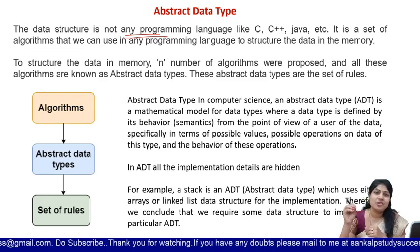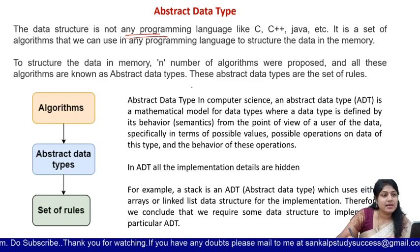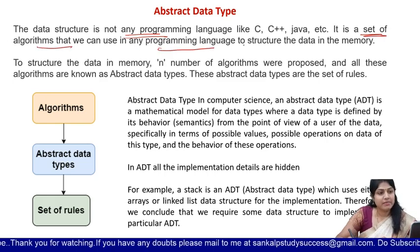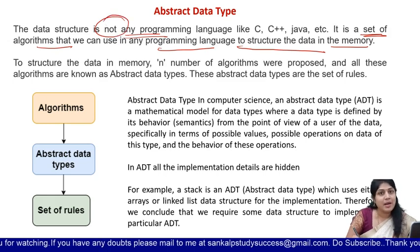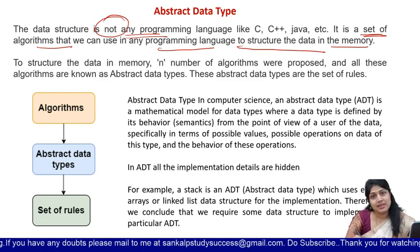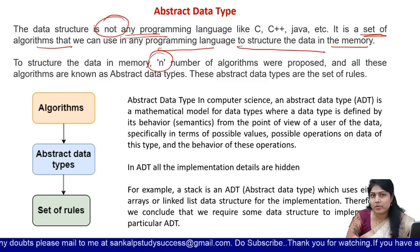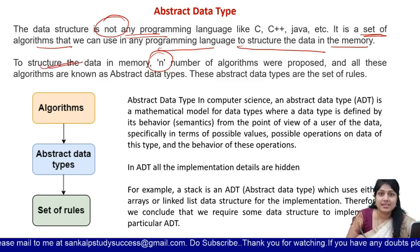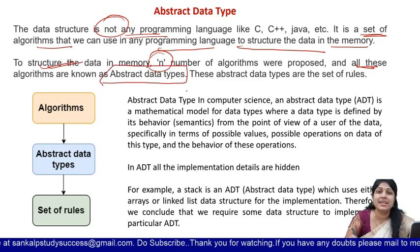We can say that data structure is a concept or a collection of algorithms to structure the data. It is a set of algorithms that we can use in any programming language to structure the data in memory. Data structure is not a programming language like C, C++, and Java. To structure data in memory, we may require n number of algorithms. All these algorithms are known as nothing but abstract data types.